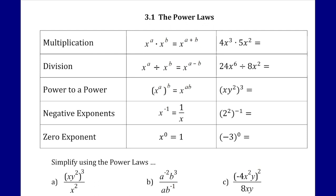The first rule is multiplying powers — when we multiply powers we add the exponents. In our example, 4x cubed times 5x squared: for the 4 and the 5 I multiply them as normal, so 4 times 5 is 20. Then for x cubed times x squared, I add the exponents: 3 plus 2 is 5.